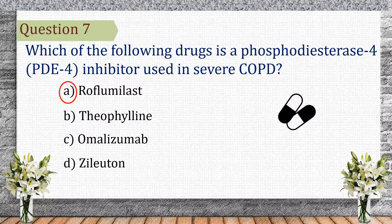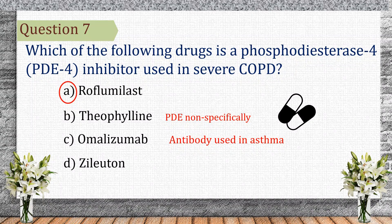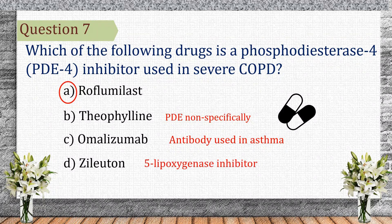Let's see the other choices. Theophylline inhibits PDE nonspecifically and has more side effects. Omalizumab is an anti-IgE monoclonal antibody used in asthma, not COPD. Zileuton is a 5-lipoxygenase inhibitor used in asthma.